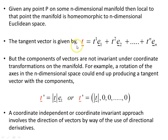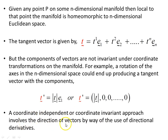The tangent vector at point p is given by this expansion for n-dimensional space. The components of vectors are not invariant under coordinate transformations — if you rotate the axes in n-dimensional space, you produce a tangent vector with rotated components. Coordinates are not invariant and are not a good basis for talking about transformations. A coordinate-independent approach involves the direction of vectors, using directional derivatives, because what is invariant with a vector is direction and magnitude, not the components.